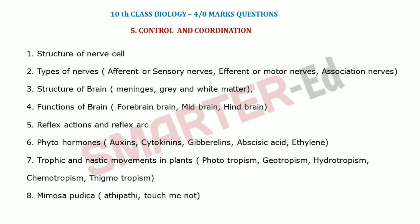Next questions include alkaloids, differences between primary and secondary metabolites, and differences between excretion and secretion. In the fifth lesson, we cover the structure of the nerve cell, types of nerves, and structure of the brain — including meninges, gray matter, white matter, and parts of the brain. We also need to write functions of the forebrain and midbrain.